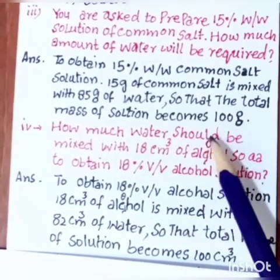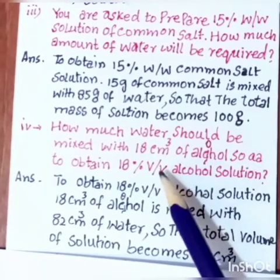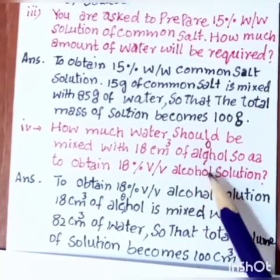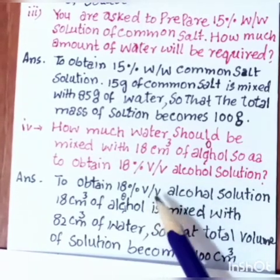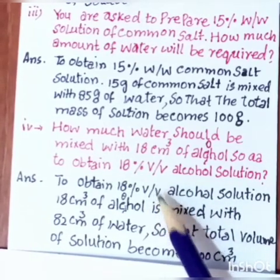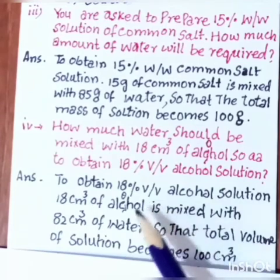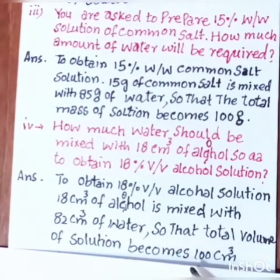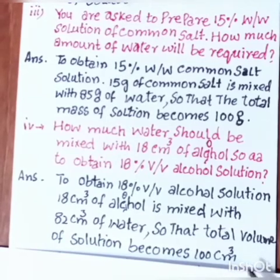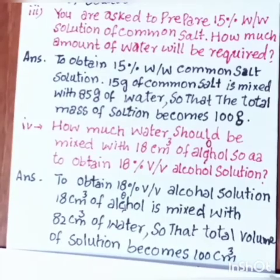Next question: How much water should be mixed with 18 cubic centimeters of alcohol to obtain an 18% volume by volume alcohol solution? Answer: 18 cubic centimeters of alcohol is mixed with 82 cubic centimeters of water so that the total volume of the solution becomes equal to 100 cubic centimeters.